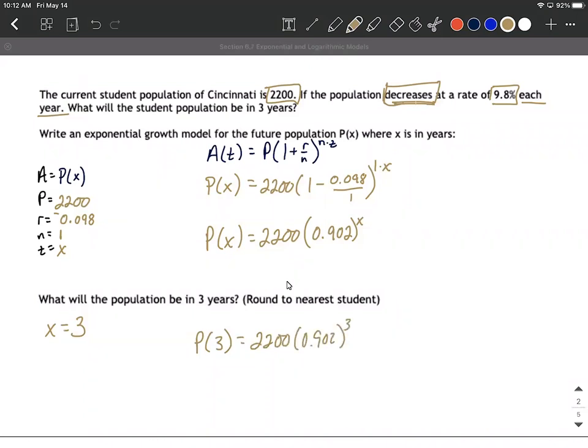which is really just put it in your calculator. And this will be to the nearest whole person, 1,615 students.